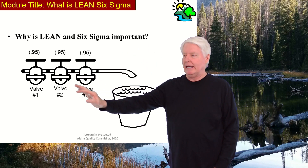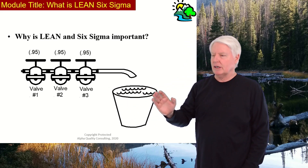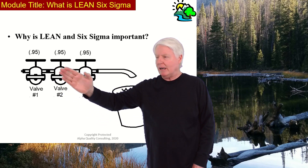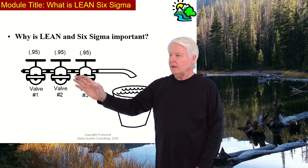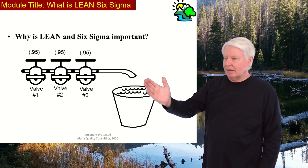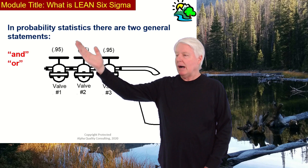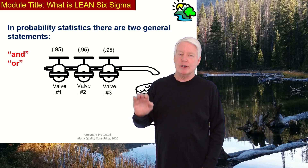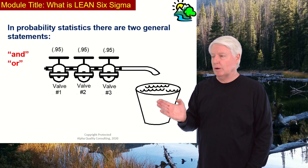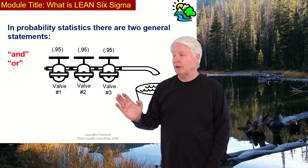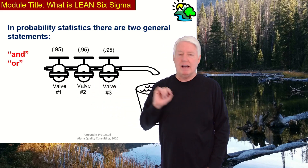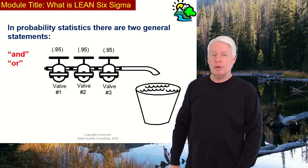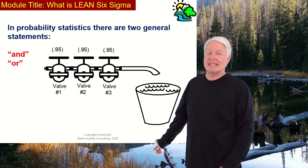Why is Lean Six Sigma so important? Consider this simple project: I want to fill a bucket full of water. I have some piping and three valves. The objective requires valve 1 to work, and valve 2, and valve 3 — that is an AND statement. In probability, when you have AND statements, you multiply all the probabilities together. If each valve has a 95% probability of success, then 0.95 × 0.95 × 0.95 gives approximately an 86% overall success rate.